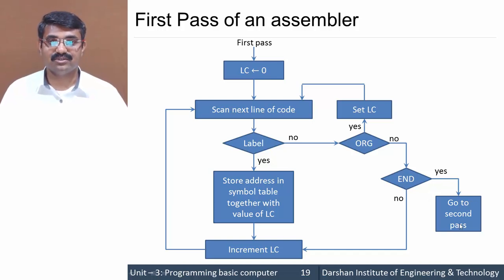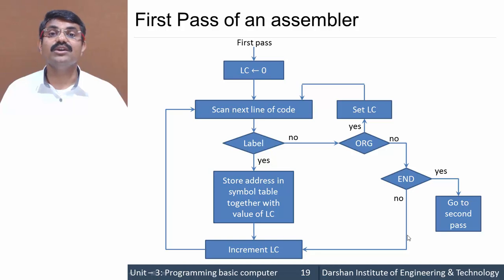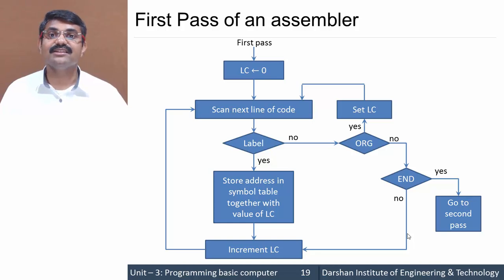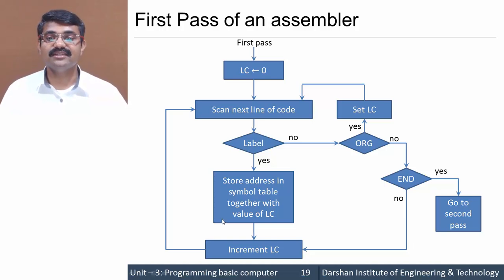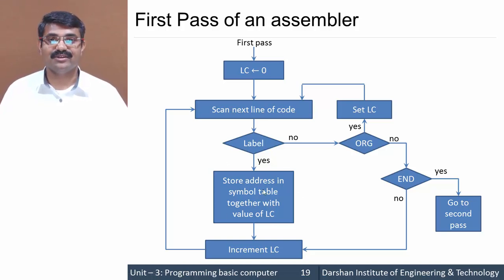If the scanned line is not any of these specific instructions, we are not concerned about what it is — it can be any other pseudo instruction or any machine instruction. In the first pass, we are only concerned about symbols. If a symbol is present, we do the required processing; otherwise, we do nothing. This is what the first pass of an assembler is.